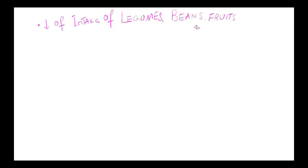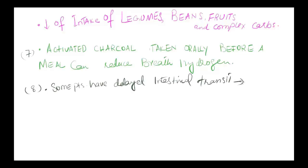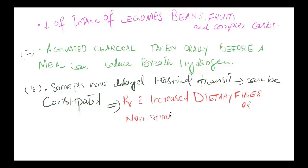Decrease intake of complex carbohydrates. Activated charcoal, if taken orally before a meal, can reduce breath hydrogen. Some patients may have delayed intestinal transit and be constipated. Treatment with increased dietary fiber or non-stimulant osmotic laxatives, not lactulose, can relieve constipation in these patients.